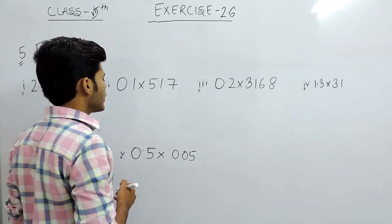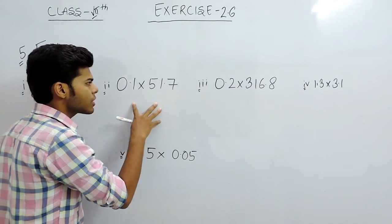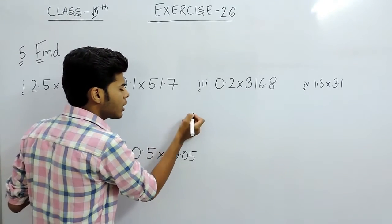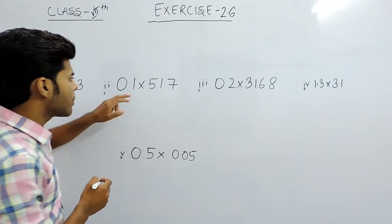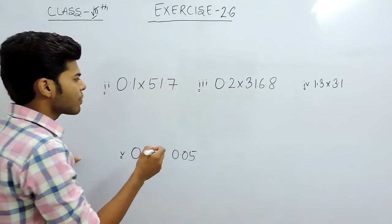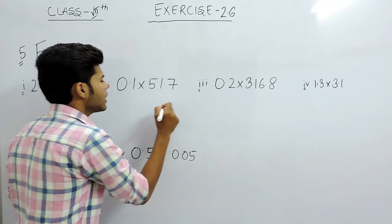As I have already told you, in decimal multiplication, first we multiply the numbers normally and then we put the decimal place starting from the right towards the left by counting the number of decimal points. There are two decimal points, so we will put two decimal points starting from the right towards the left.